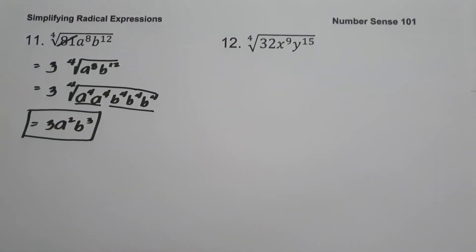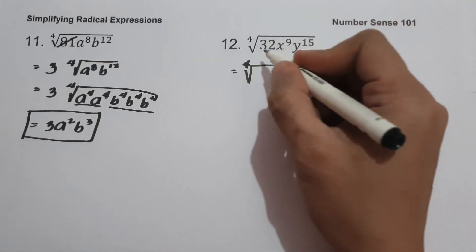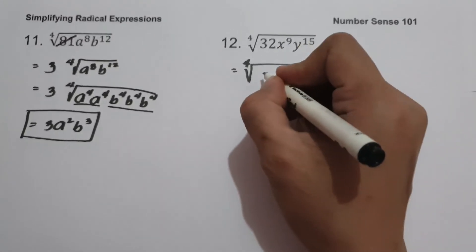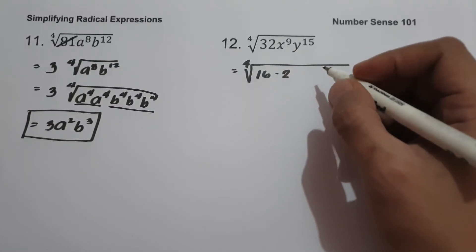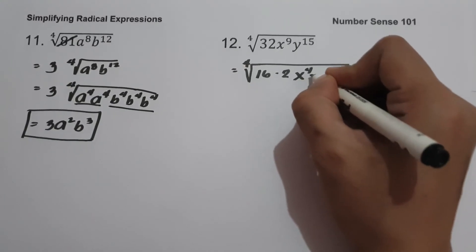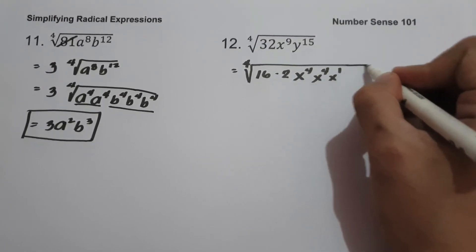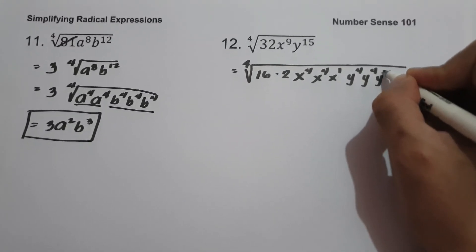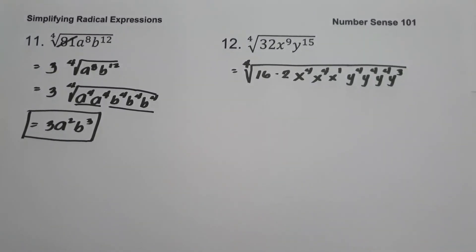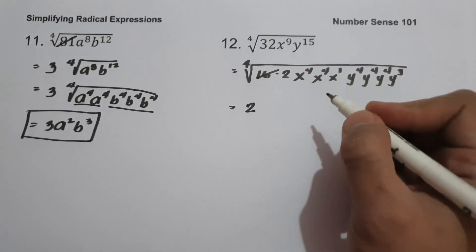On example number 12, we have fourth root of 32x raised to 9, y raised to 15. To simplify, we find the factors of 32 where one factor is a perfect fourth power. The factors are 16 and 2. Then we divide the exponents of x and y by 4 because our index is 4. For x raised to 9: x to the 4th three times and x raised to 1 — total is 9. For y raised to 15: y to the 4th three times and y cubed — total is 15. The fourth root of 16 is 2.